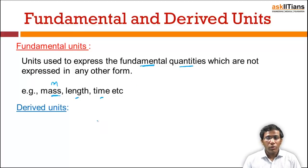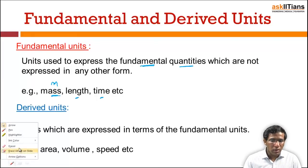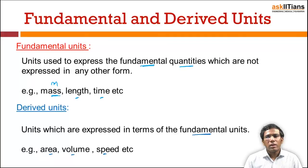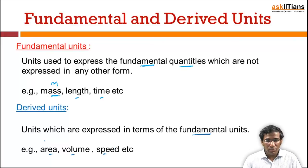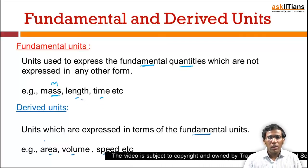Derived units are those units which are expressed in terms of the fundamental units — that is, in terms of mass, length, and time. For example, area is meter squared (expressed in terms of length), volume is also expressed in terms of length, and speed is expressed in terms of length and time.